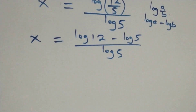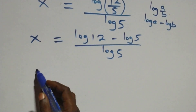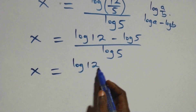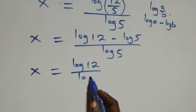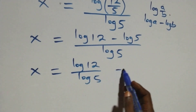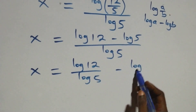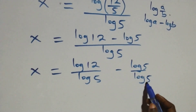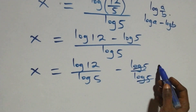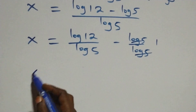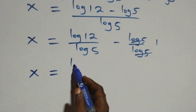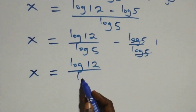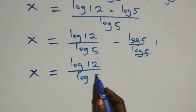We separate this into two fractions, and we have x equals to log 12 over log 5 minus log 5 over log 5. Log 5 over log 5 cancels — we have 1 left. Then x now equals to log 12 over log 5 minus 1.